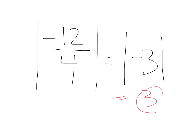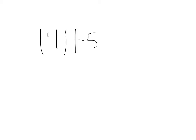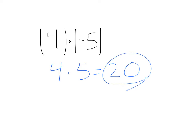Again, that's going to be positive three, because negative three is three spaces from zero. If we had absolute value of four times the absolute value of negative five, that would be four times five, which would be 20. So remember, absolute value always is the distance from zero and makes anything inside it positive.